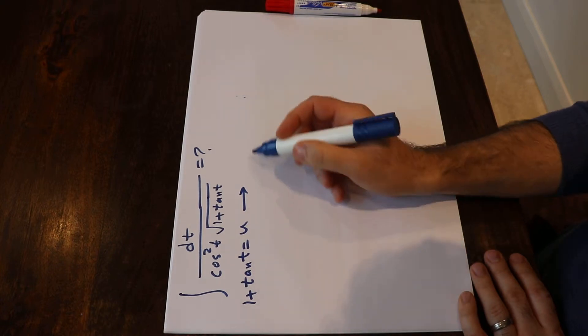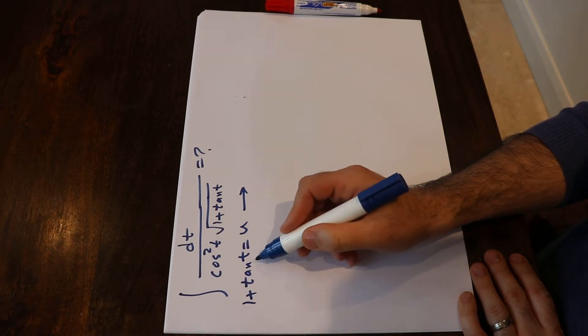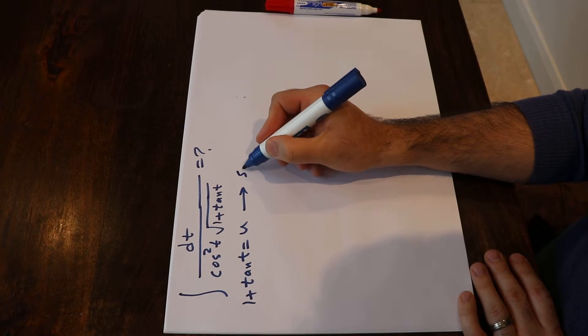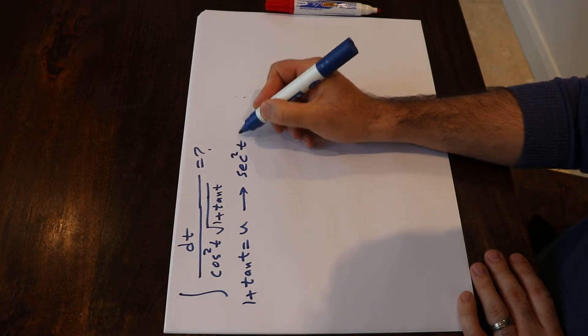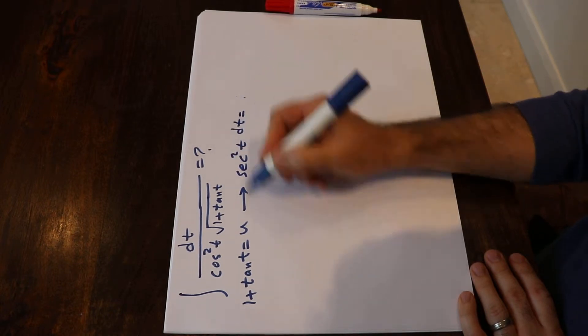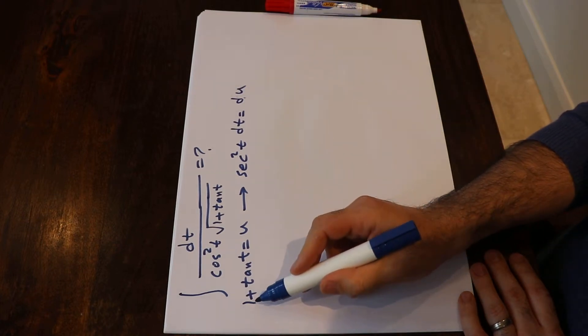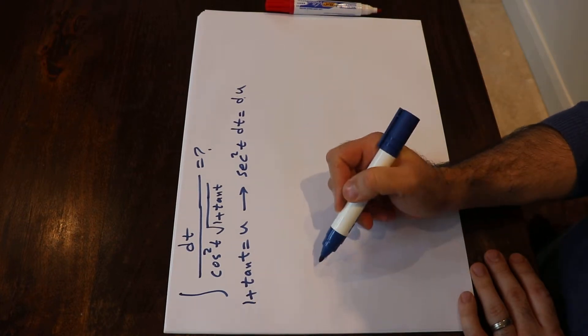...you get, for tangent t, the derivative of tangent t is equal to secant square t, so secant square t dt will be equal to du. Note that the derivative of 1, that is a constant, is equal to 0.